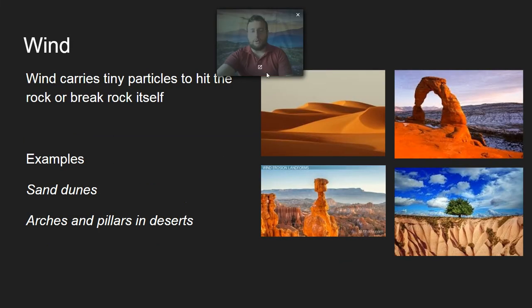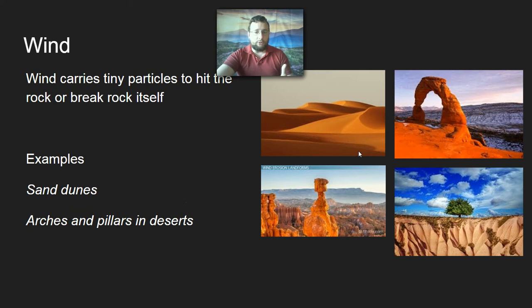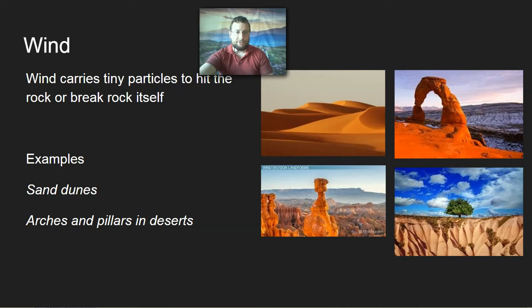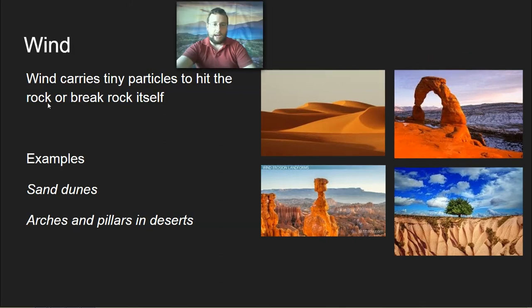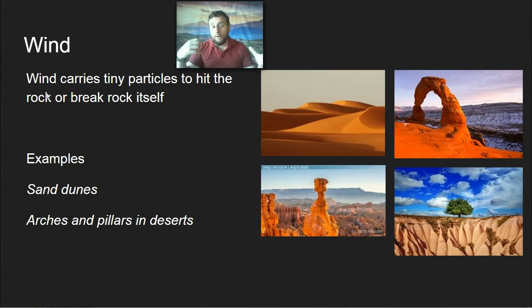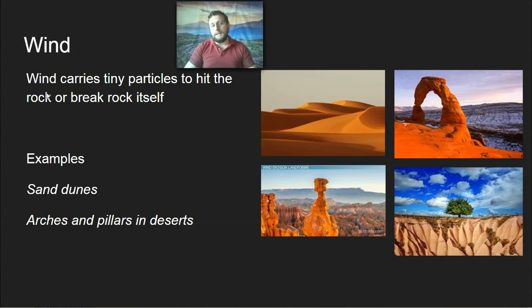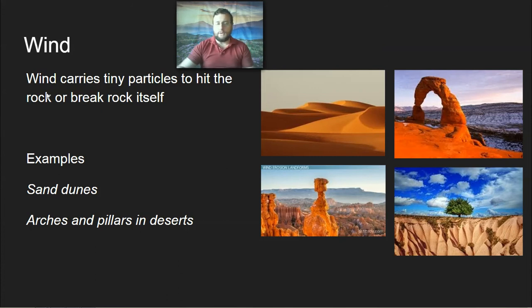Wind erosion — on tests you will see pictures of dunes, arches, or pillars. If we're far away from water, in the middle of a desert, wind probably did it. Wind carries tiny particles which hit and break the rock, or the wind itself colliding against the rock slowly, over many years, breaks the rock down and eventually carves out dunes, arches, and pillars in deserts.